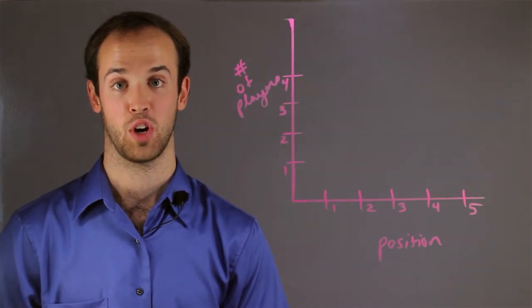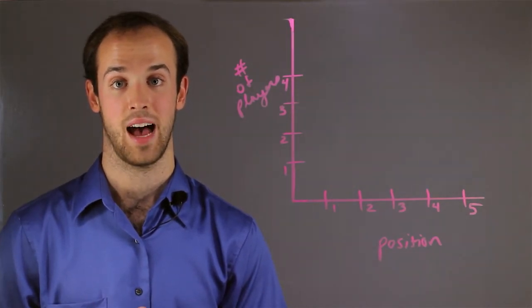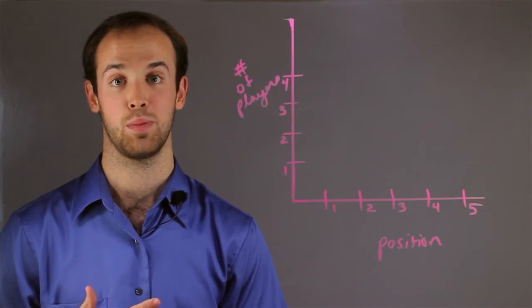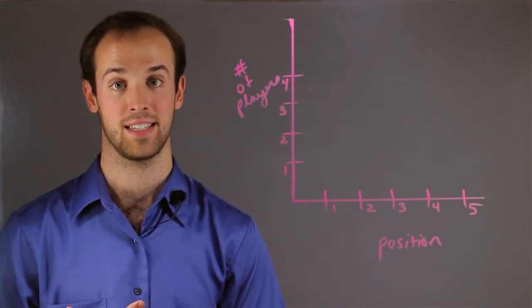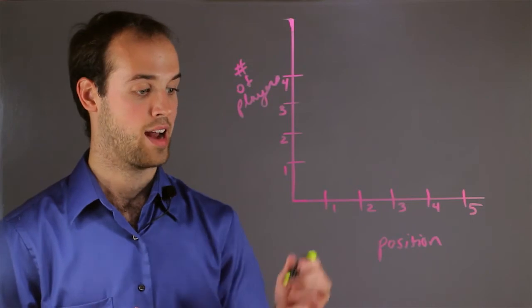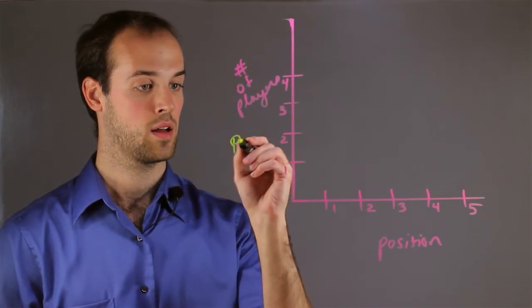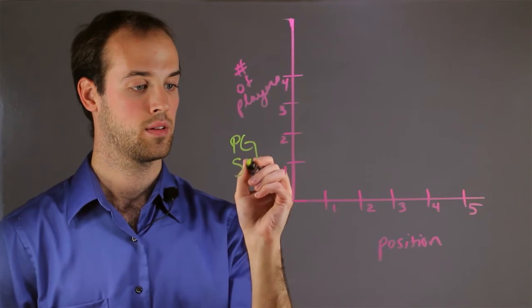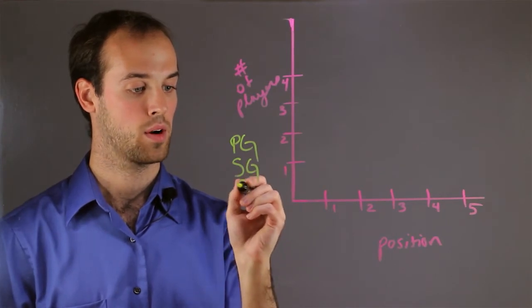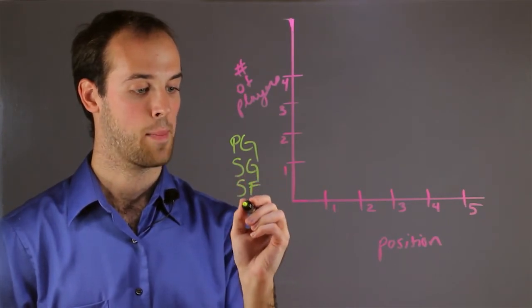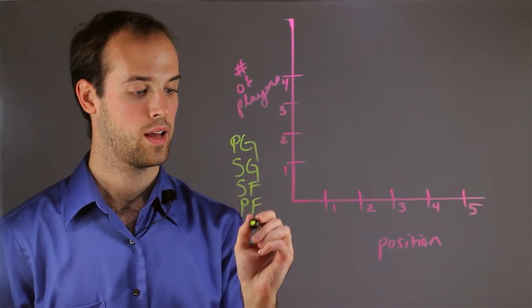Well, since basketball positions are usually categorized by size, I can assign each position a number based on its size. I know I have a point guard, a shooting guard, a small forward, a power forward, and a center.